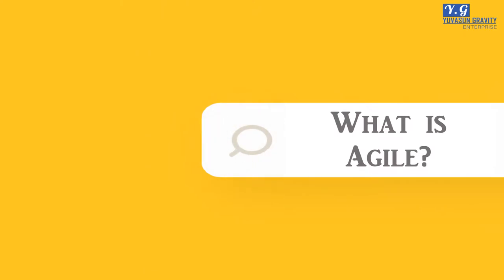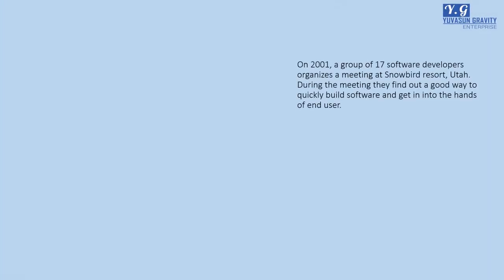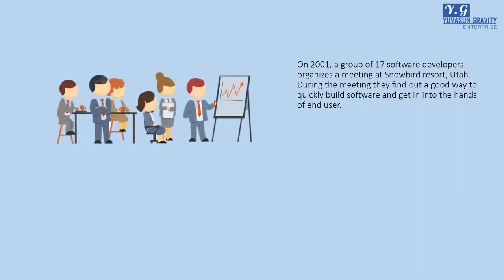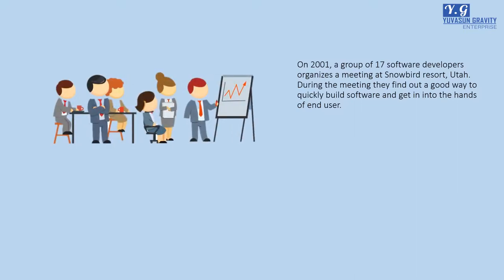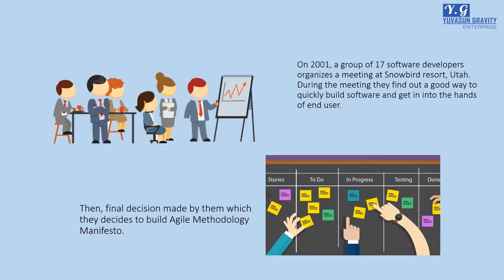What is Agile? In 2001, a group of 17 software developers organized a meeting at Snowbird Resort, Utah. During the meeting, they found a good way to quickly build software and get it into the hands of end users. Then, the final decision made by them was to build the Agile Methodology Manifesto.